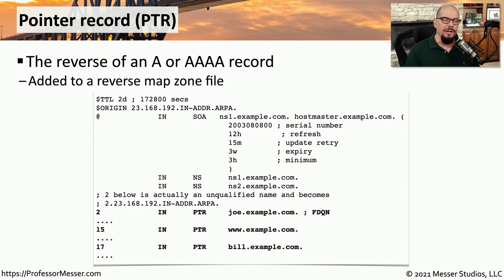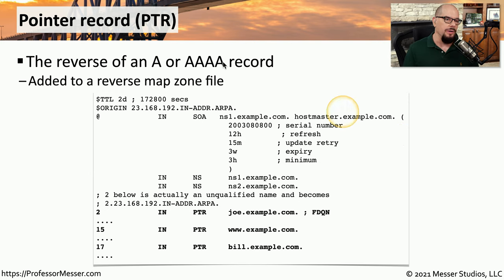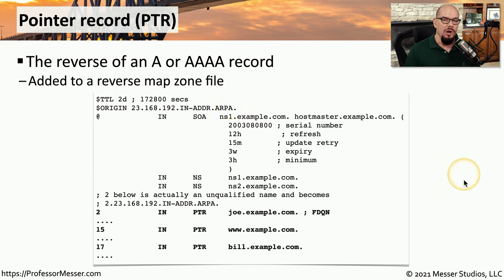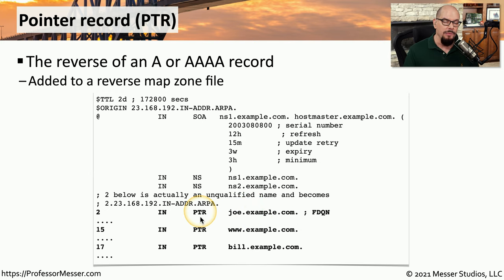Earlier, we looked at address records — querying a DNS server with a fully qualified domain name and receiving back an IP address. We can also create the reverse of an address record, called a pointer record or PTR record. This allows us to perform a reverse DNS lookup, where we provide an IP address and the DNS server responds with a fully qualified domain name by looking it up in the pointer record.